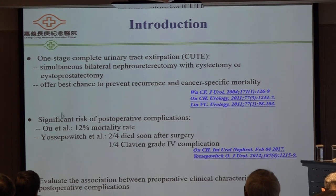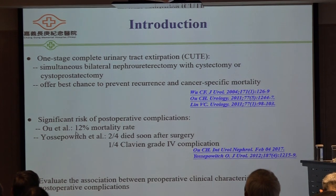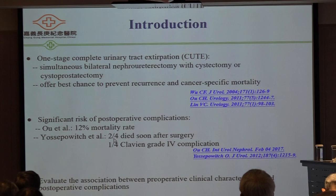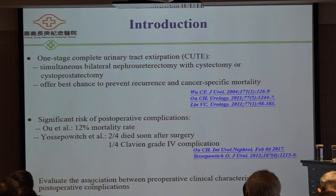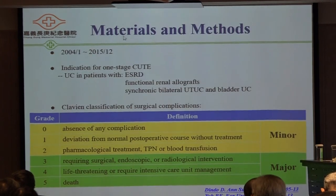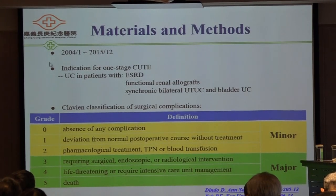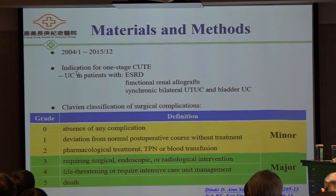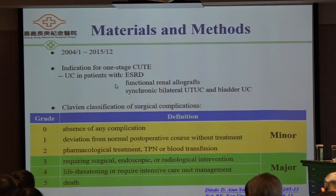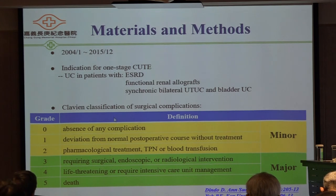According to reports from the literature, the mortality rate ranges from 12% to 50%. Our study aimed to evaluate the association between preoperative clinical characteristics and postoperative complications. We collected patients from 2004 to 2015. The indication for the procedure was used in patients with end-stage renal disease and synchronous bilateral UTUC and bladder urothelial carcinoma. We defined major complications as Clavien-Dindo grade three or above.